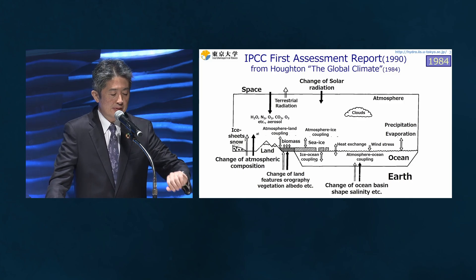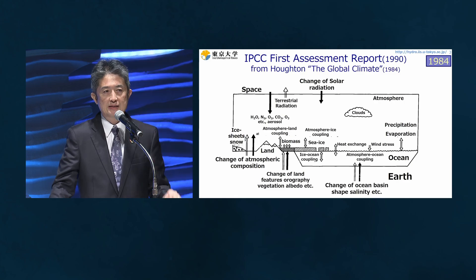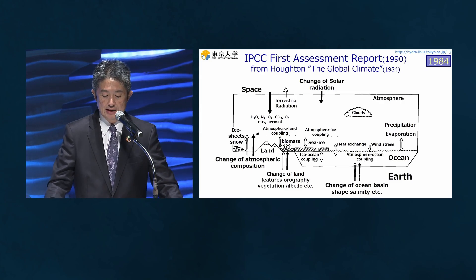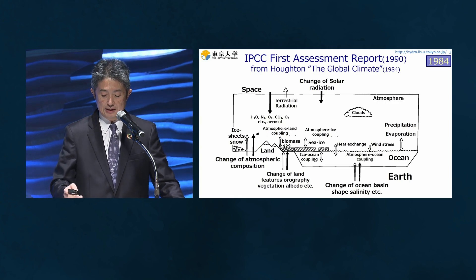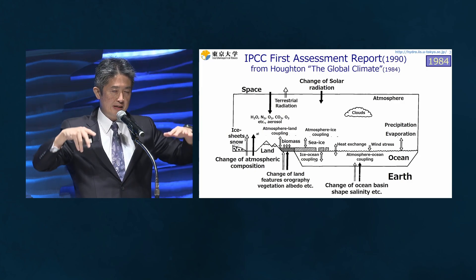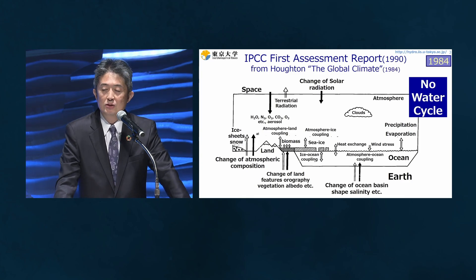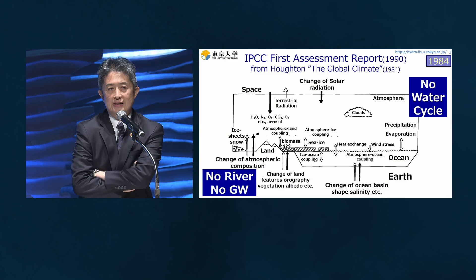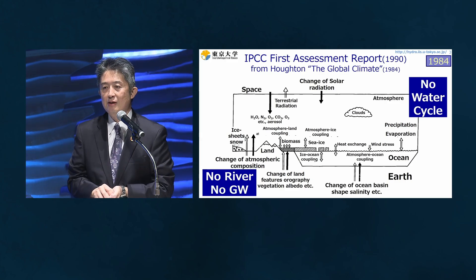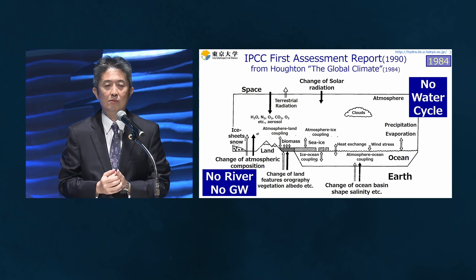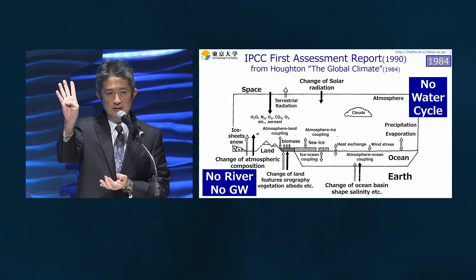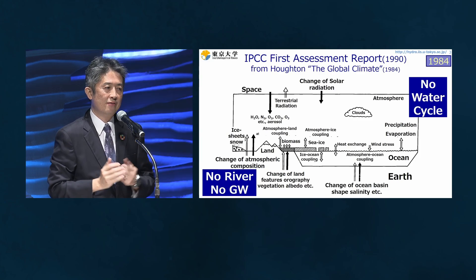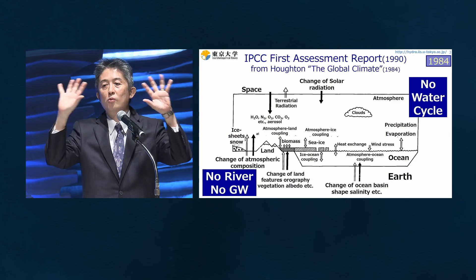This is a diagram introduced in the first IPCC — the Intergovernmental Panel on Climate Change — report on the climate system, nearly 40 years ago. There is interaction between atmosphere and ocean, and atmosphere and land, but I would complain about this diagram: there is no water cycle, no river, no groundwater illustrated. Even though from the first climate simulation by Syukuro Manabe, who got the Nobel Prize in Physics, we knew that ozone, carbon dioxide, and water vapor are critical components — water vapor is included, but no water cycle.